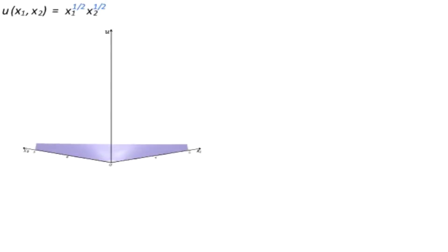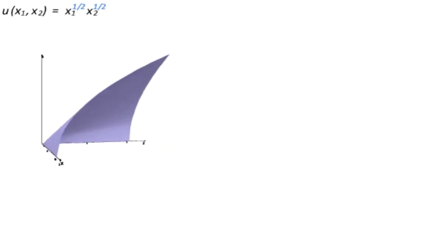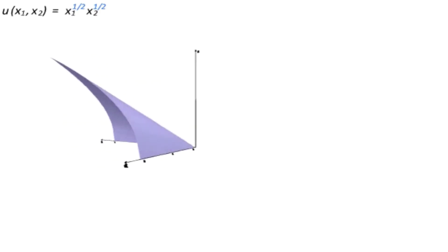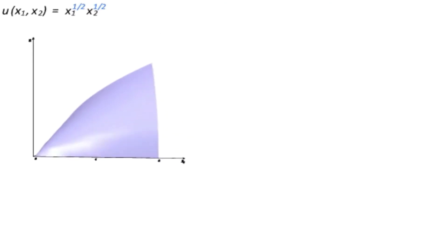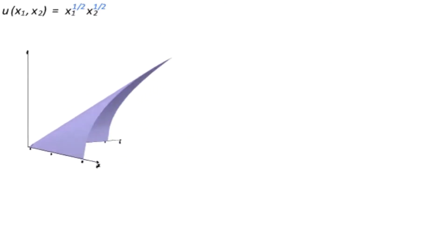Take, for instance, the utility function x1 to the 1 half, x2 to the 1 half, that we just graphed out here. You can see what this function looks like as we rotate it around. It's simply a hollow mountain without a peak, as our utility functions tend to be when we assume more is better.